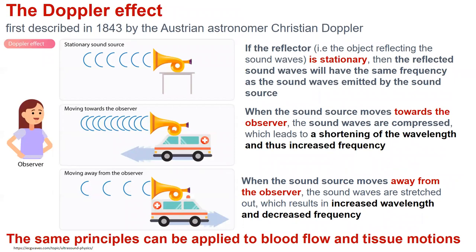The Doppler effect was first described in 1843 by Austrian astronomer Christian Doppler. If the reflector is stationary, the reflected sound waves will have the same frequency as the sound waves emitted by the sound source. When the sound source moves towards the observer, the sound waves are compressed, which leads to a shortening of the wavelength and an increased frequency. When the sound source moves away from the observer, the sound waves are stretched out, resulting in increased wavelength and decreased frequency.